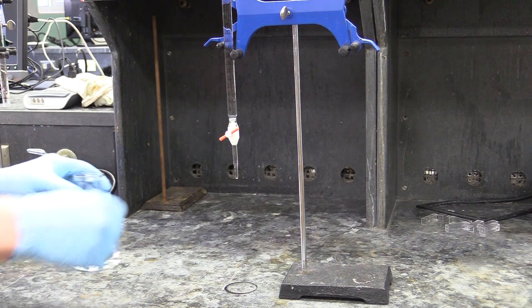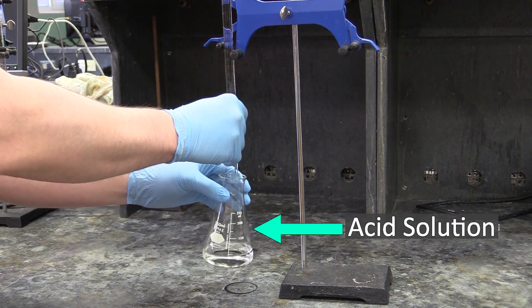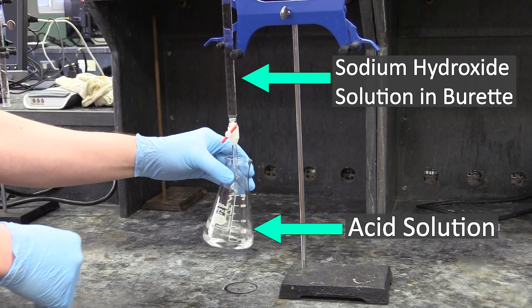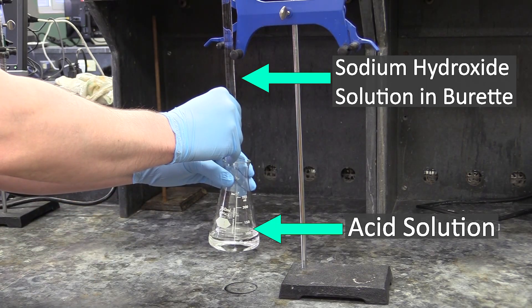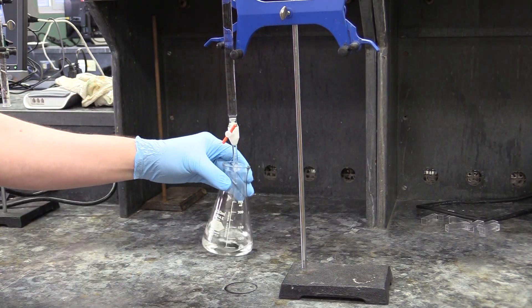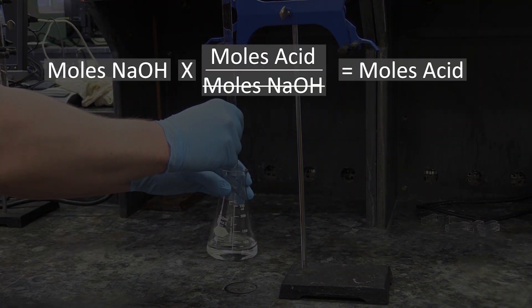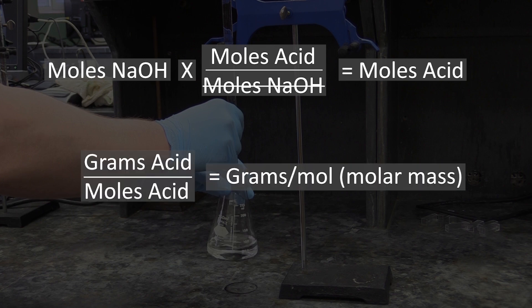In this technique, you will start out with a solution of acid in an Erlenmeyer flask. You will then add sodium hydroxide solution to the acid by burette, and you will keep adding it until all of the acid has reacted with the sodium hydroxide. In your calculations, you will take the moles of sodium hydroxide you added, use the reaction stoichiometry to convert to moles acid, then take the grams of acid that were present and divide by moles to get the acid's molar mass.